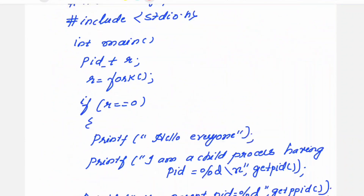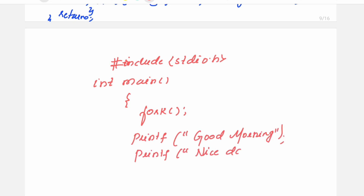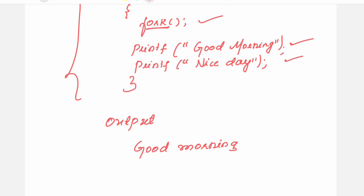Normally, when we write a program, the fork will create a duplicate process. The current process is the parent process and the newly created process is called the child process — these two processes will run concurrently. When you execute this program, you will get the printf lines printed two times: one executed by the child process and another executed by the parent process. But you may not get them in the same sequence.